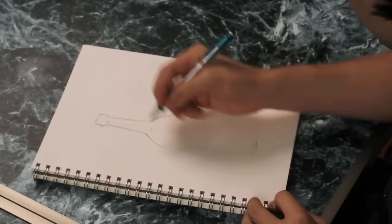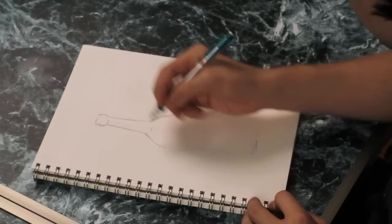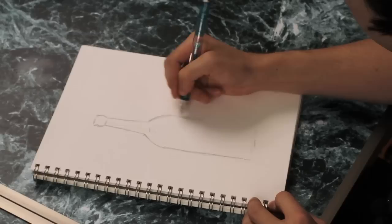And then once you get that general shape lined in, you can just take a line straight down to the very bottom of the bottle, where it will be sitting on whatever stand you want.